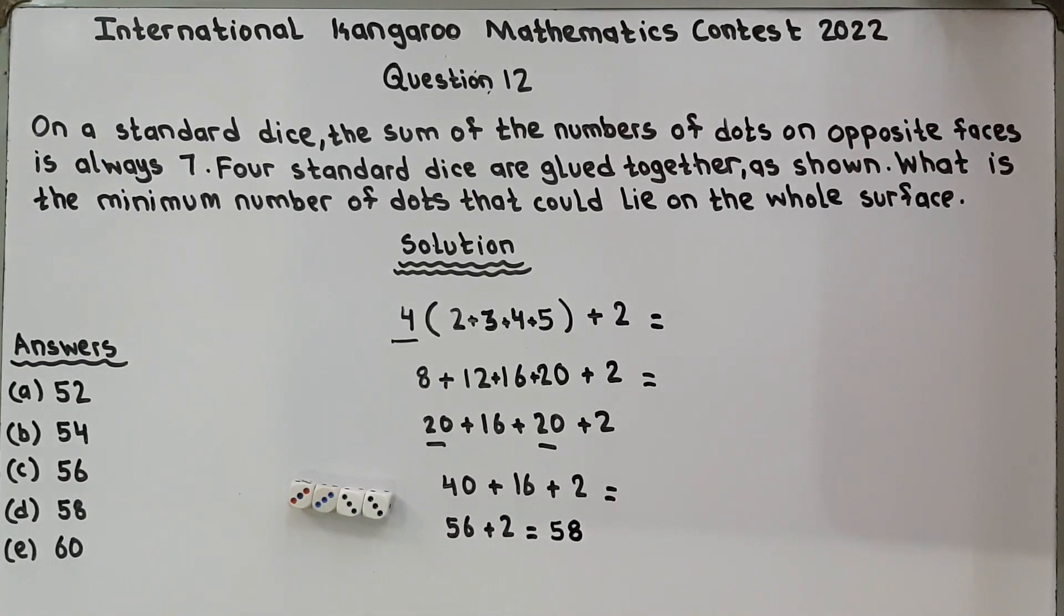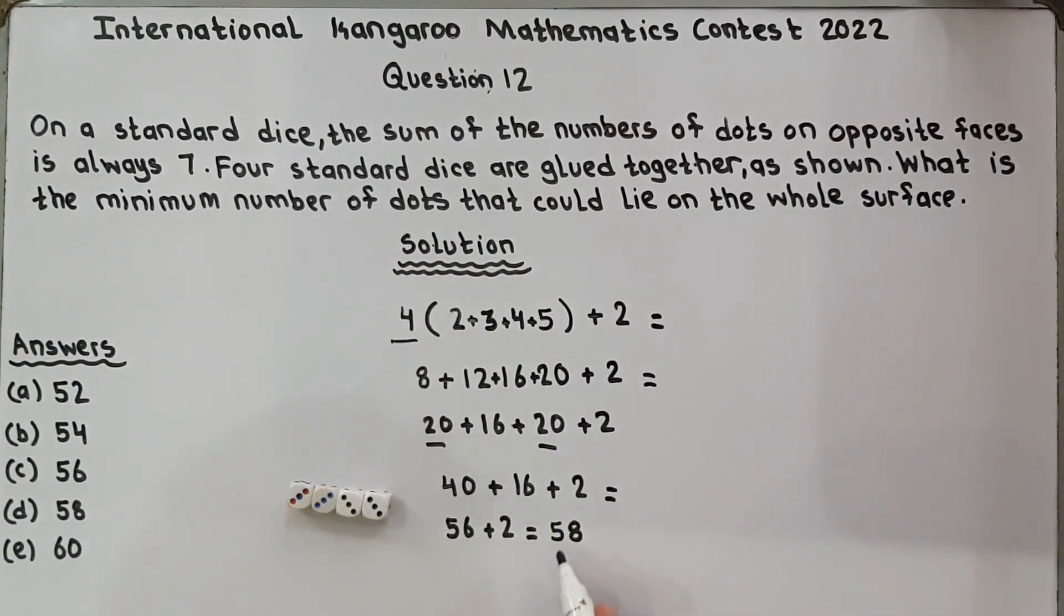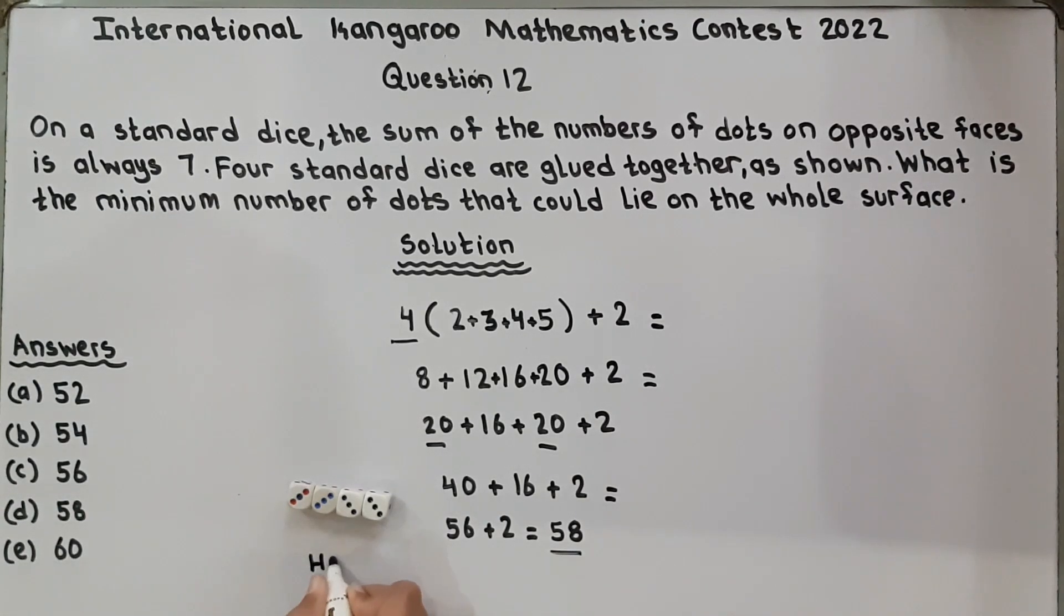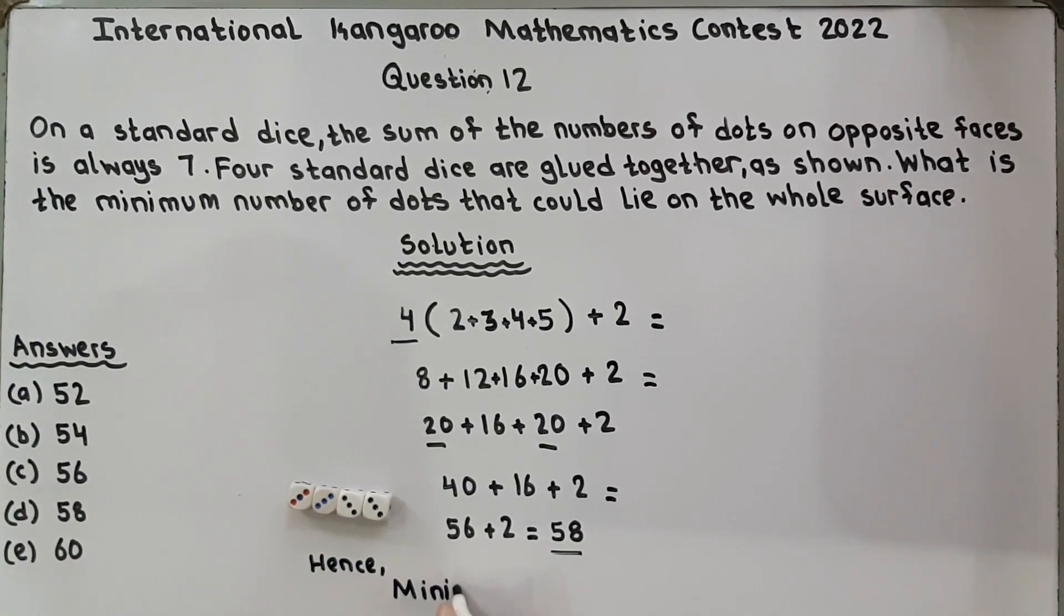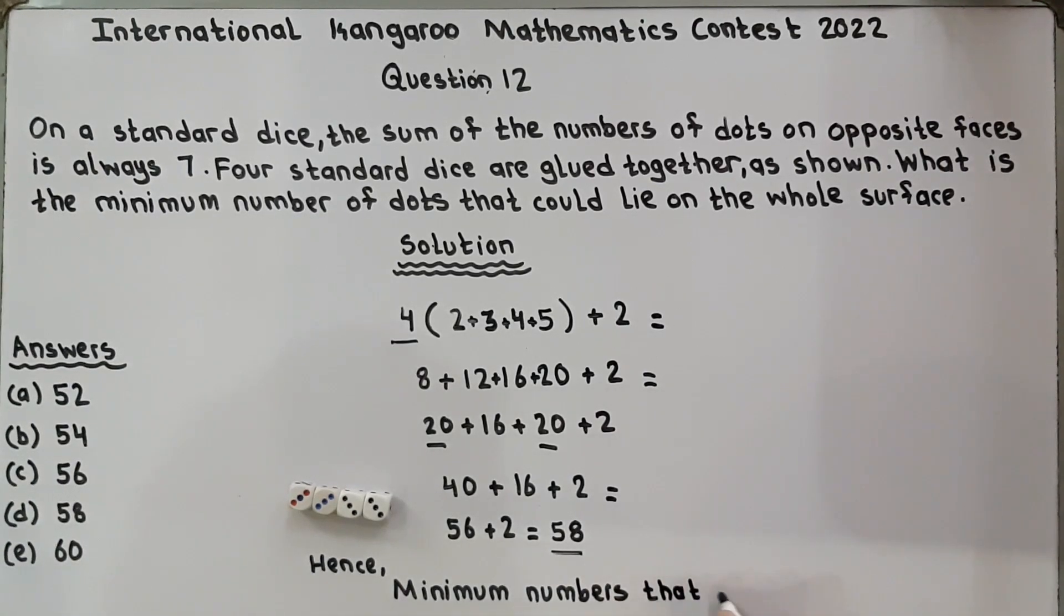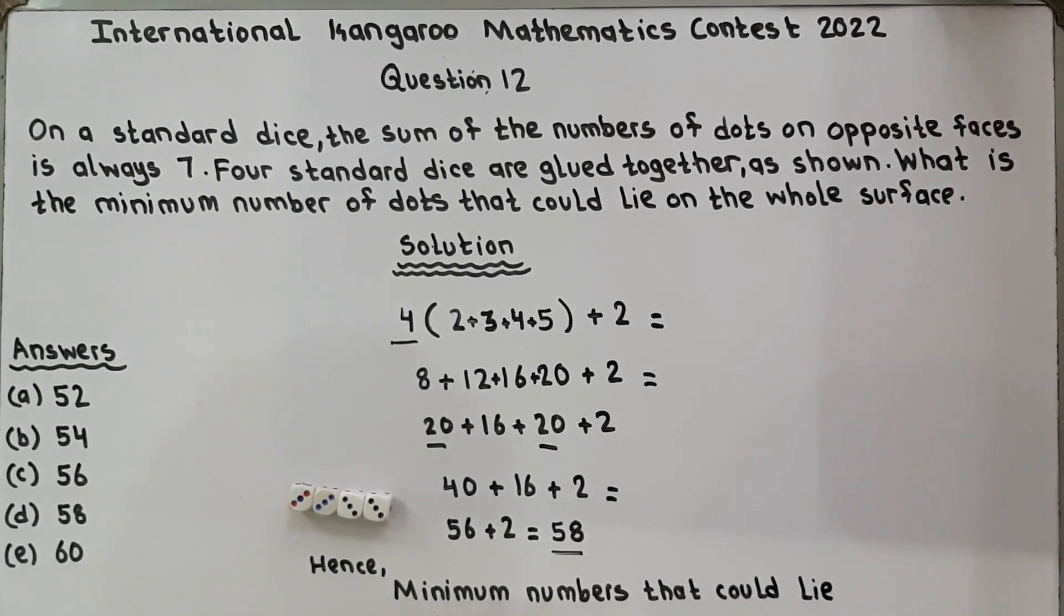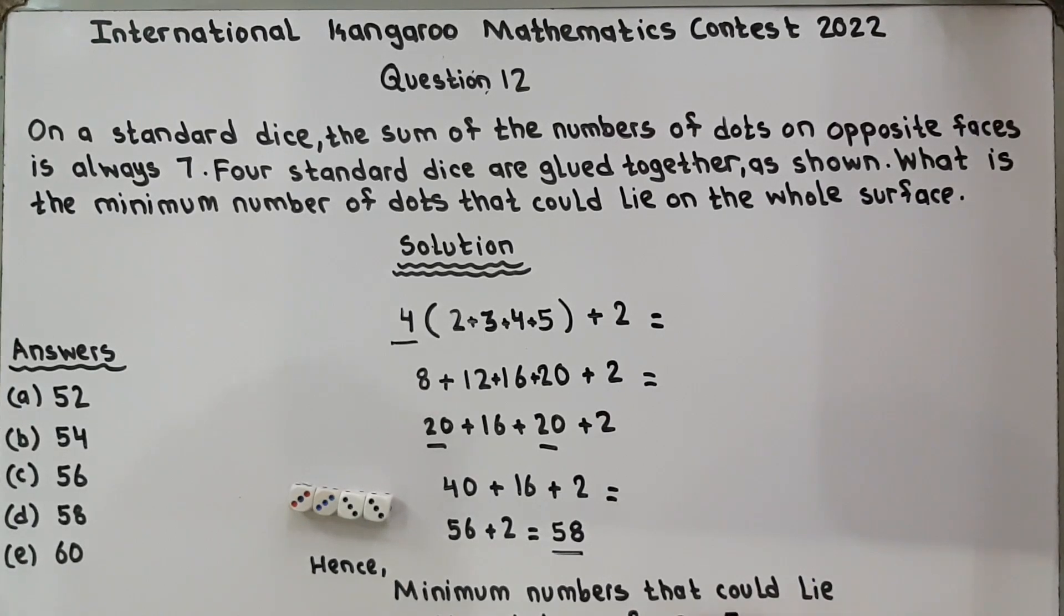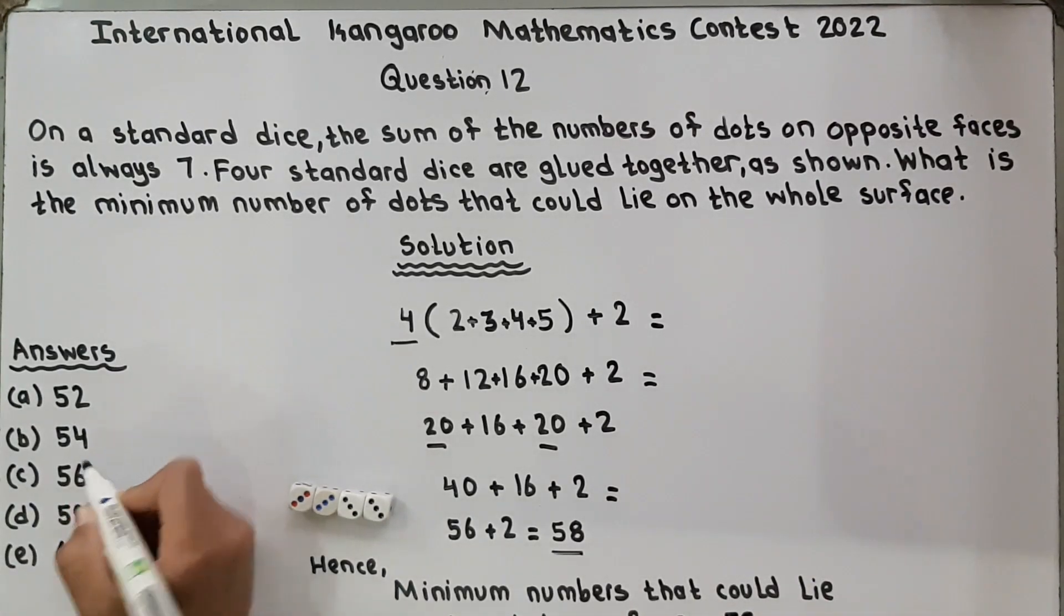And so the surface area, look. The minimum number of dots that could lie on the whole surface, hence minimum numbers that could lie on the whole surface, whole surface is equal to 58. And 58 is option number D, so I will circle it. And here the question ends.